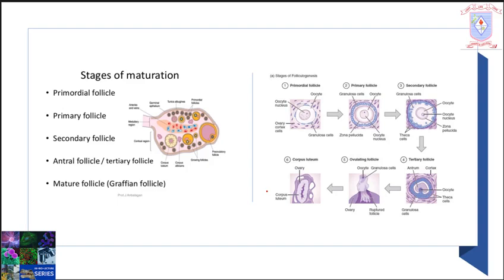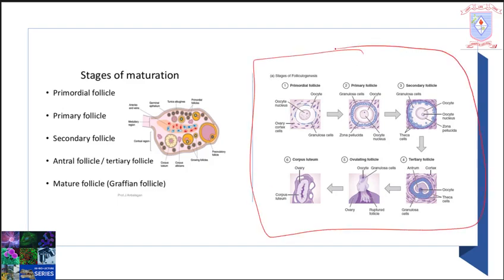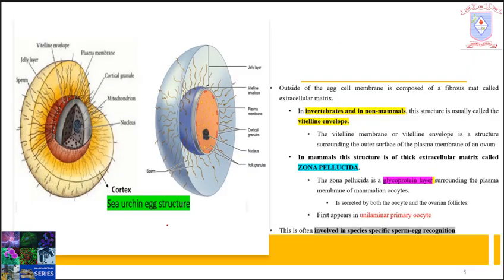For a quick understanding of the layers around the egg in humans, see this diagram. You must have an idea about the themes in the diagram such as the primordial follicle, the primary follicle, the secondary follicle, tertiary follicle, ovulating follicle or Graafian follicle, and corpus luteum. If you don't know these themes and the characteristics of each stage, I recommend you to watch previous videos about follicle development and eugenesis classes.